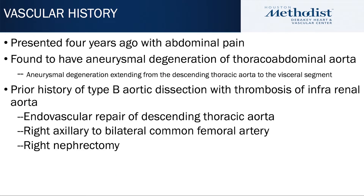She presented to us 4 years prior to her current admission with complaints of abdominal pain. At that time she was found to have aneurysmal degeneration of her thoracoabdominal aorta, extending from her descending thoracic aorta to the visceral segment. She had a prior history of type B aortic dissection with thrombosis of the infrarenal aorta.